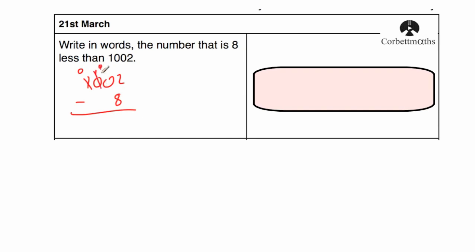Cross that out and put a 9, put a 1 there. Borrow from the 10, 9 and put a 1 there. So we've got 12 take away 8, which is 4. And then 9 take away 0, which is 9. And 9 take away 0, which is 9. So the answer is 994.